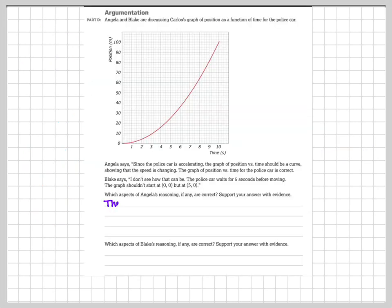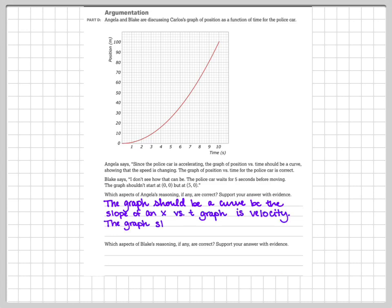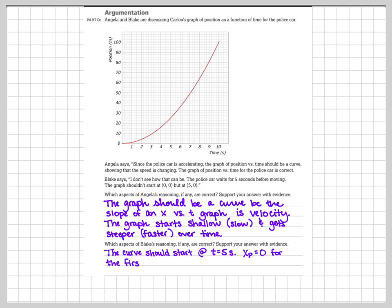Finishing up this workbook page — the last page seemed pretty straightforward. Carlos has made a pretty good-looking position graph, and Angela certainly loves it and sees nothing wrong with it. We should elaborate on why Angela likes this graph so much, using the claim-evidence-reasoning format. She's claiming the graph is good because it's a curve — a curve that starts shallow and ends up steep. The slope of a position versus time graph represents velocity, so a slope going from shallow to steep represents an object that is speeding up, which is what's happening in this scenario.